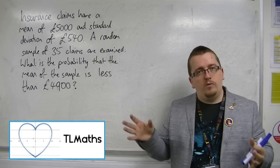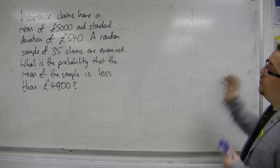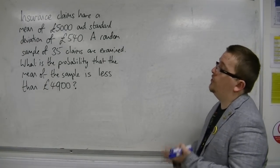Okay, so here is a problem where we're going to use the central limit theorem. Insurance claims have a mean of £5,000 and a standard deviation of £540.